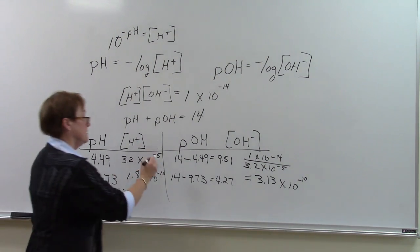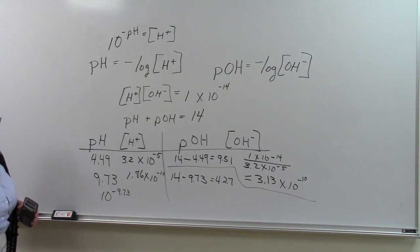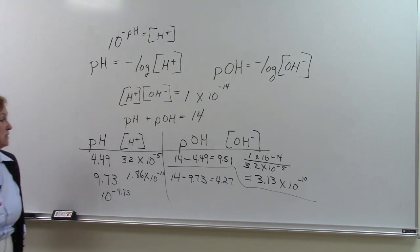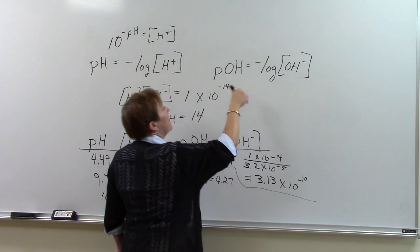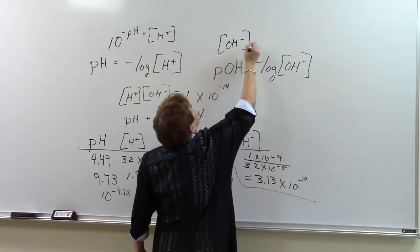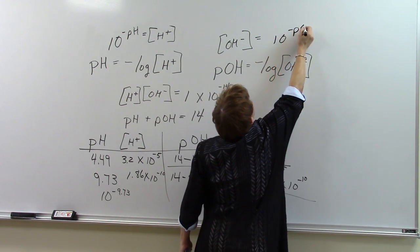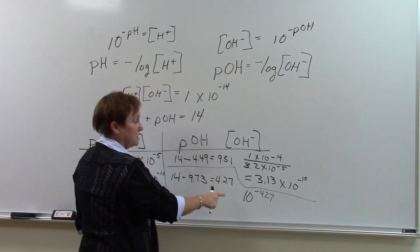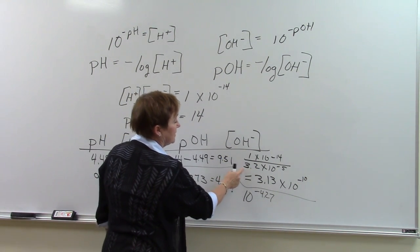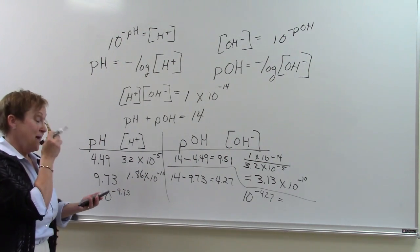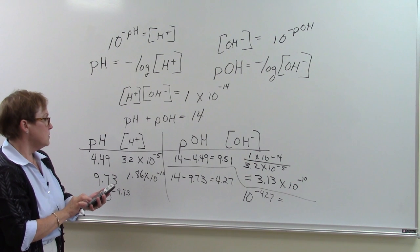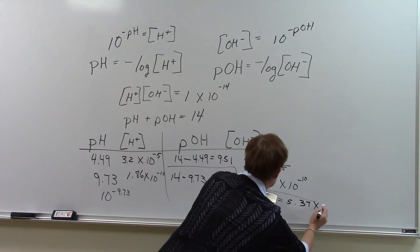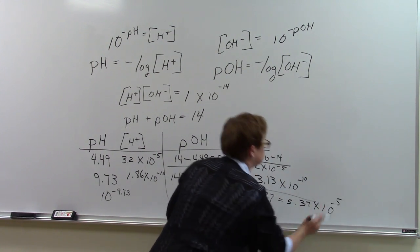And once again, to get the hydroxide ion concentration, I can do it this way. I can take 1 times 10 to the minus 14th, divided by the hydrogen ion concentration. Another way I can do it is I can realize that the hydroxide concentration is equal to 10 to the negative pOH. So if I took 10 to the negative 4.27, I should get the same answer as if I took 1 times 10 to the minus 14th and divided by this. So the answer for that is going to end up to be 5.3 times 10 to the negative 5th.